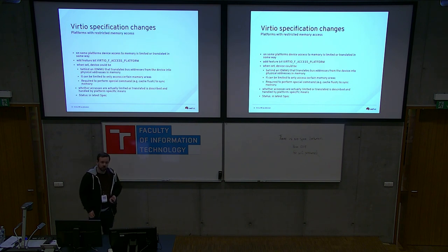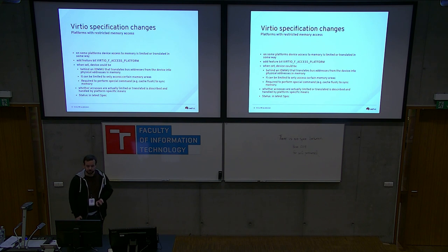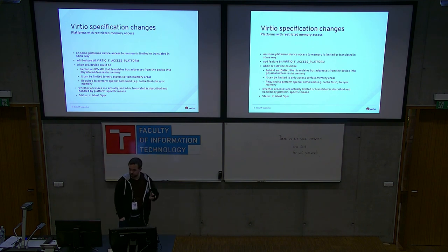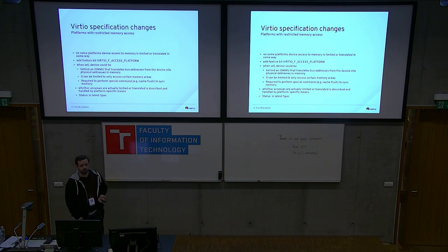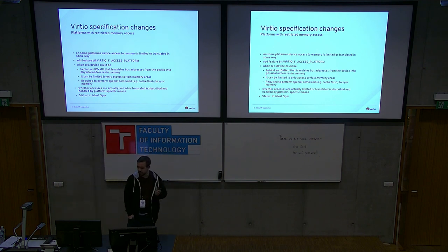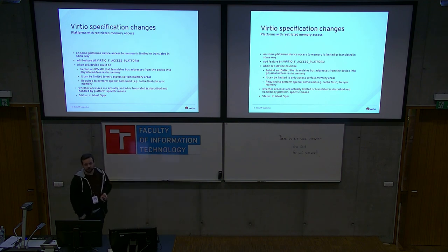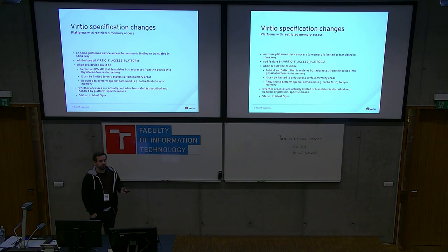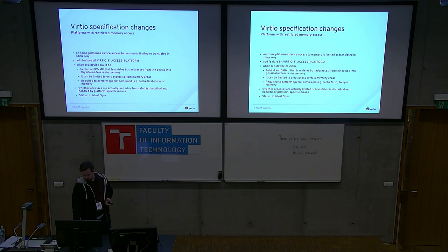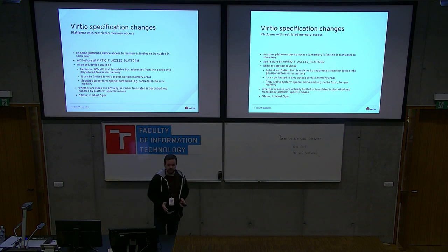On some platforms, memory accesses can be restricted in some way — addresses might be translated, or not all memory can be accessed. It could be behind an MMU or IOMMU that translates bus addresses to physical addresses. There could be some special operations needed for the memory to be updated, like a cache flush or something. There's a new feature bit that basically indicates exactly that — if this bit is present, it means some platform code needs to kick in and handle this. If it's not present, the driver sees the same physical addresses that the device sees.